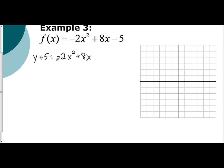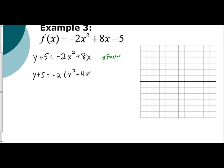Remember, you cannot complete the square with a leading coefficient that's not 1. So I'm going to have to factor in order to create a coefficient of 1. And I'm making a note of that because remember, that affects our c value. So I have y plus 5, and I factor out the negative 2 to get x squared minus 4x.